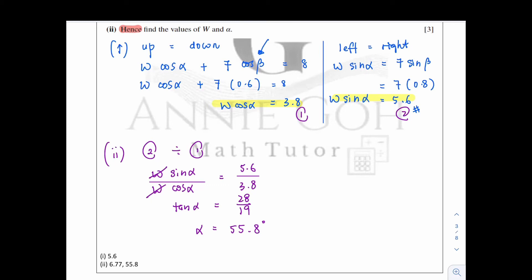So after we get alpha, we can just sub into either equation 1 or 2 to get the w's value. So let's say I sub it into equation 1. So w cos 55.8 equals to 3.8. And please take note here, when you substitute the alpha value 55.8 here, you're supposed to sub in the whole value in your calculator and not the rounded up value to keep the accuracy of the final answer. And hence, your w should be equal to 6.77 Newton, correct to 3 significant figures. That's how we solve for these questions.